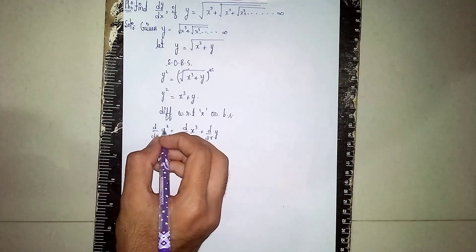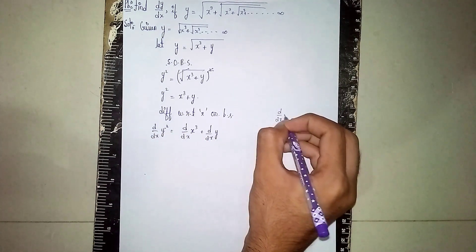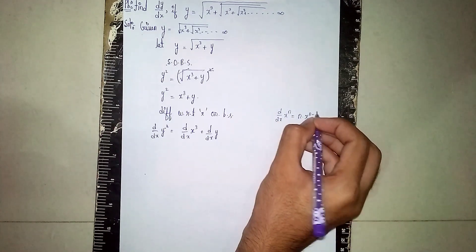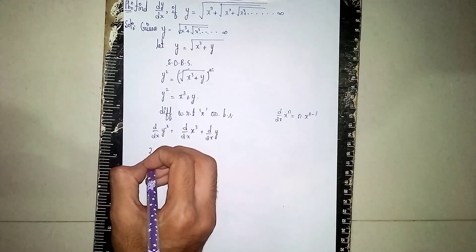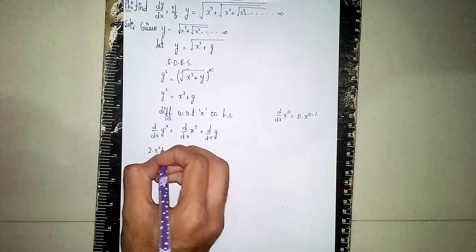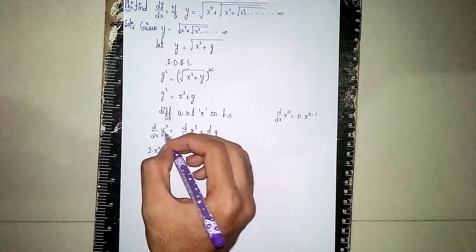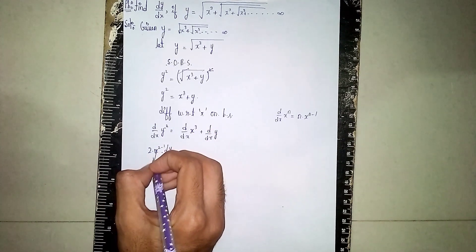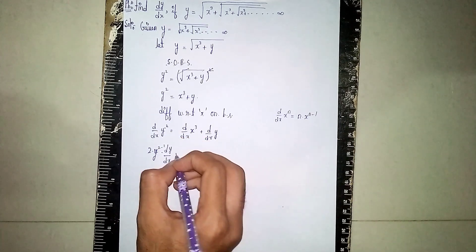Using the power rule: d/dx of xⁿ = n·xⁿ⁻¹. For y², n = 2, so it becomes 2·x²⁻¹ · dy/dx, giving us 2y · dy/dx on the left side.